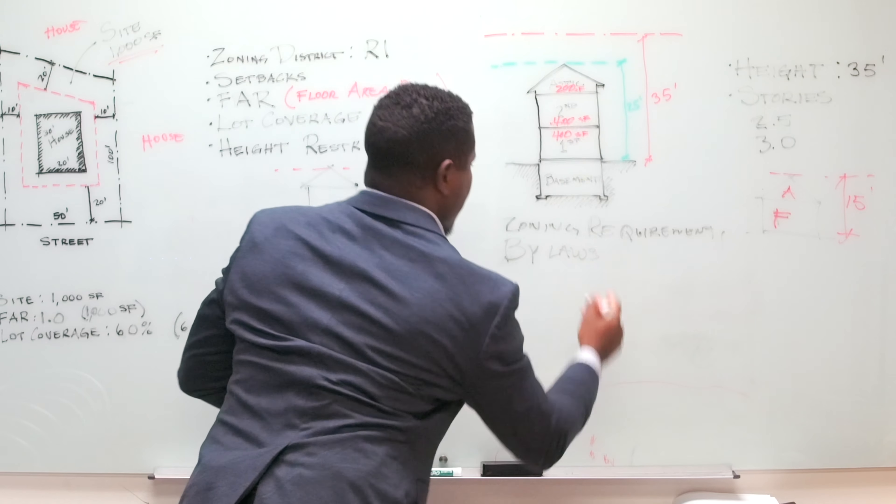Another thing I want to mention about height restrictions is that measurement can be very different depending on the lot your building is located on. You always need to go into your zoning bylaws to understand those limitations. For example, if you have a considerably flat site, the height limitations might be very different than if you are on a sloped site.